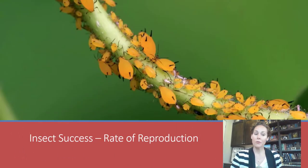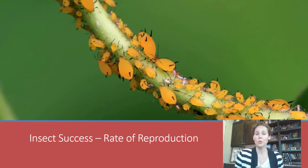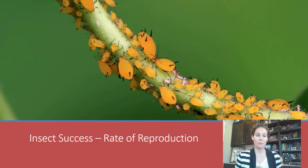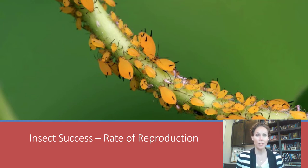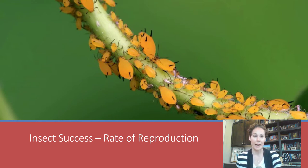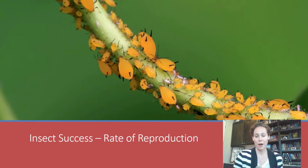One of the reasons for insects' incredible success is their ability to reproduce incredibly quickly, and this allows them to adapt very fast. An individual cannot adapt, but a population can. So if a population has gone through five generations in two months, they have the incredible ability to adapt, evolve, and accommodate themselves to changes in their environment.